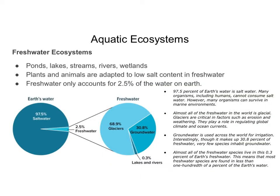First we're going to talk about how water gets divided up on Earth. You have freshwater ecosystems, which is the first topic we're going to cover, and that includes ponds, lakes, streams, rivers, and wetlands. The plants and animals in freshwater ecosystems are adapted to low salt content — meaning there is little to no salt in the water.